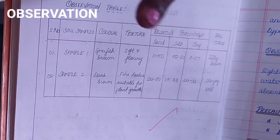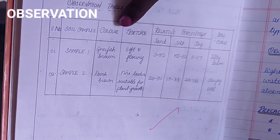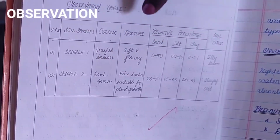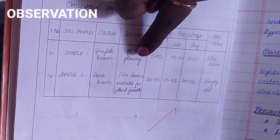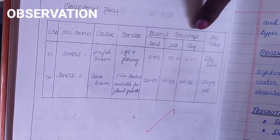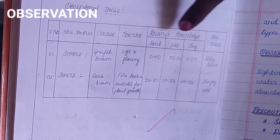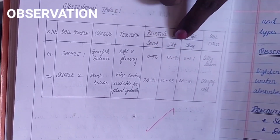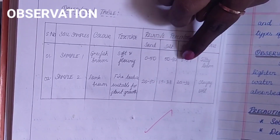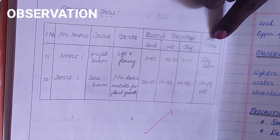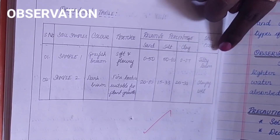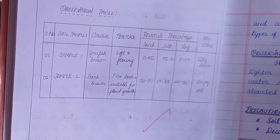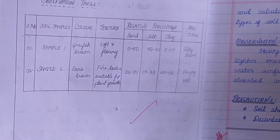Coming to the observation table — this tabular column covers soil samples A and B. Note down the color for A and B, texture for A and B, and the relative percentages: sand percentage, silt percentage, and clay percentage for soil A and B. Depending upon this, we need to find out the nature of the soil.